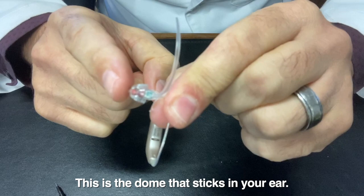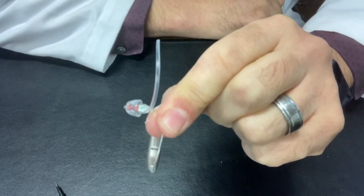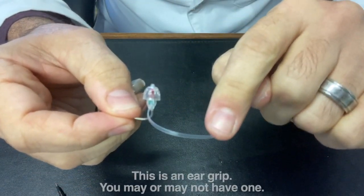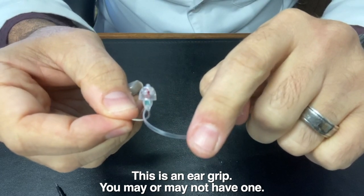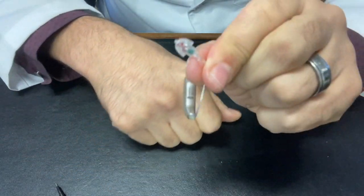This is the dome, this part here, the little part on the end that sticks into your ear, and we're going to go ahead and remove that. First of all, this ear grip may or may not be on your device. If it is, you can just kind of pull that out of the way.